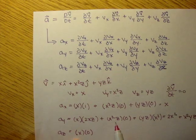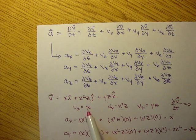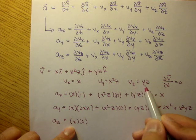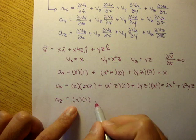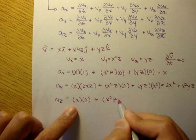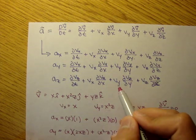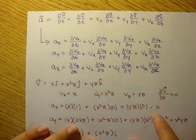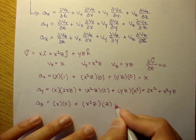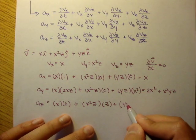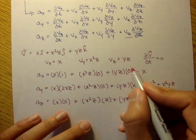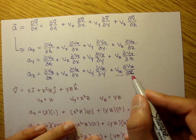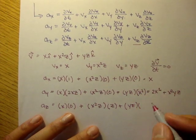For az: vx, which is x, times the partial of vz with respect to x — vz is yz, so that partial is zero. Plus vy, which is x²z, times the partial of vz with respect to y — that partial is z. Plus vz, which is yz, times the partial of vz with respect to z — that partial is y. So az equals x²z² plus y²z.